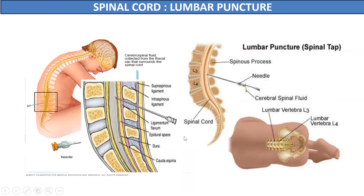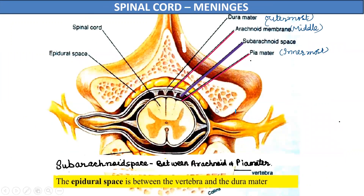Lumbar puncture should always be done at the level between the third and fourth lumbar vertebra. So this completes the three layers of meninges around the spinal cord: the outermost dura mater, the middle arachnoid mater, and the innermost pia mater. The dura mater is single-layered with an epidural space outer to it, and the pia mater is modified to keep the spinal cord in position during movements of the vertebral column.